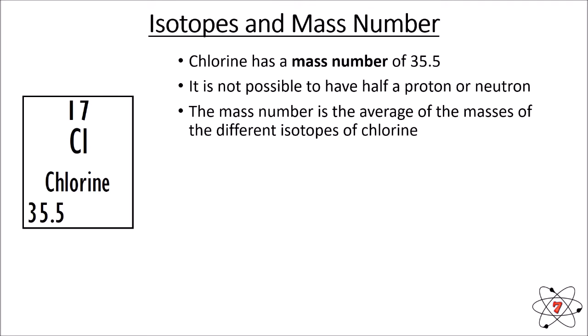The mass number is the average mass of a chlorine atom. So if we had a million chlorine atoms, added up their individual masses and took an average, we would find that average is 35.5. Some of them may be bigger, some smaller, but the average is 35.5. Chlorine has got two main isotopes.